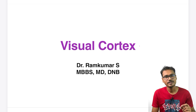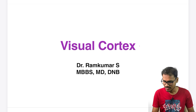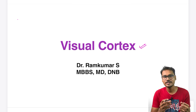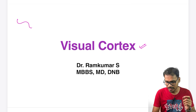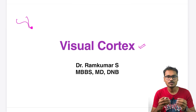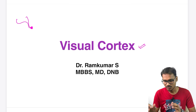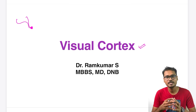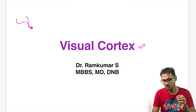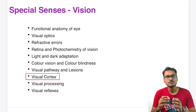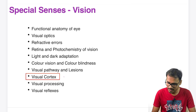Hello dear students, in this video we are going to discuss one of the interesting topics — the visual cortex. In the previous series on special senses, we were tracking the visual pathway and how it reaches the brain. Ultimately it goes to the visual cortex, where visual information such as color and shape is processed. This topic will cover how color perception and various orientations are perceived in the brain.